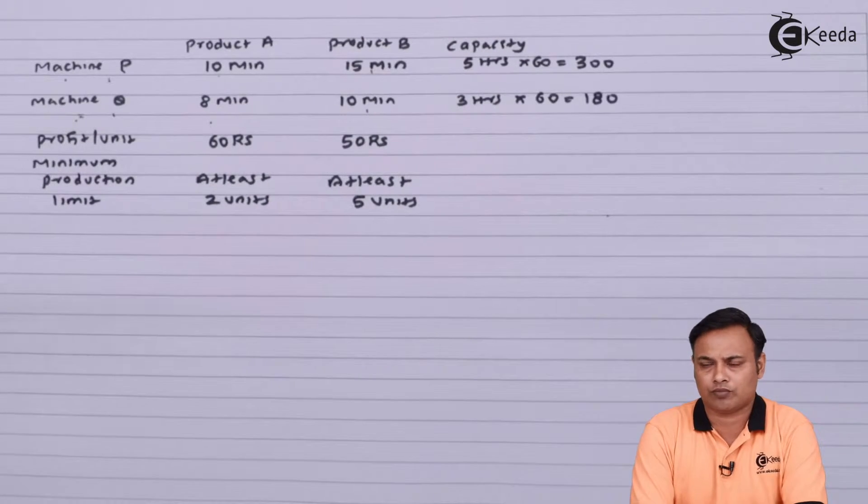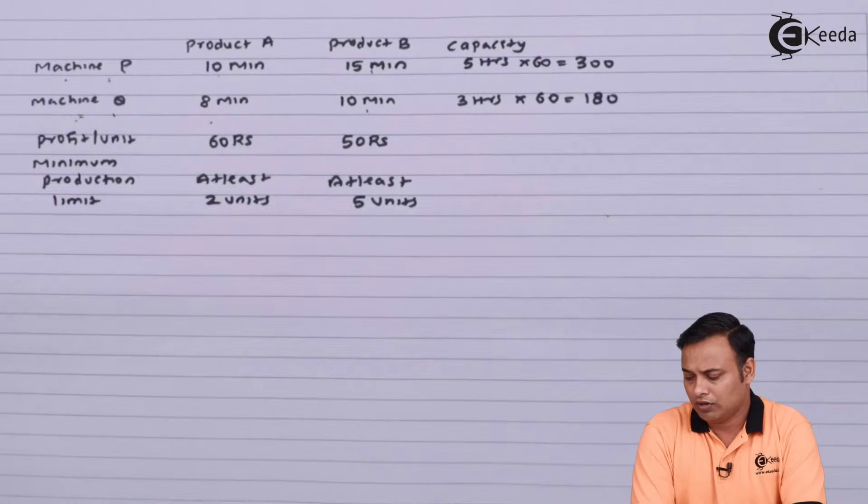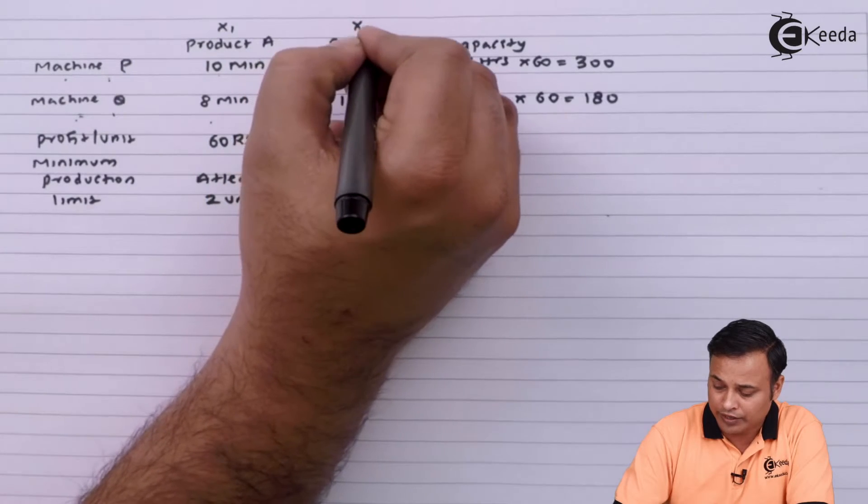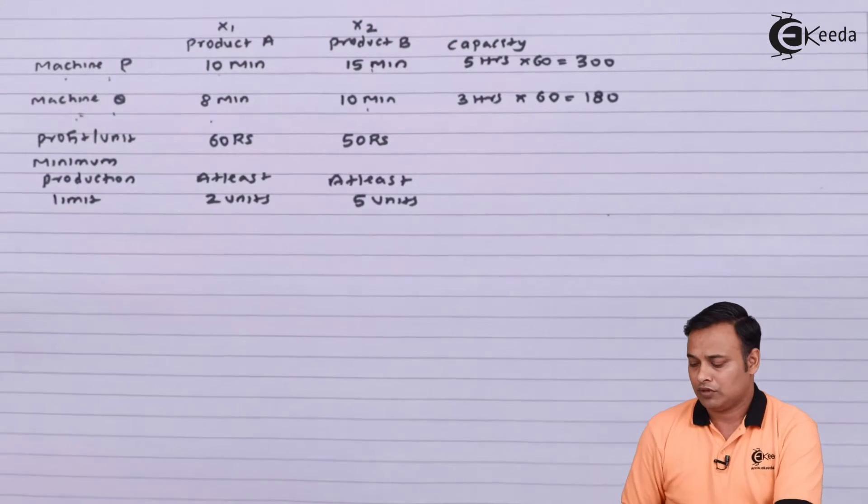Now our whole calculation or the whole problem will be based on assumption. We will assume that we are making x1 units of A and x2 units of B.